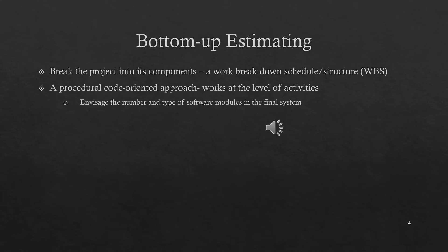In the procedural code-oriented approach, we calculate four different factors: the first is the number and type of software modules; the second is the lines of code (LOC); the third is the work content based on complexity and technical difficulty; and the fourth is the work days effort.